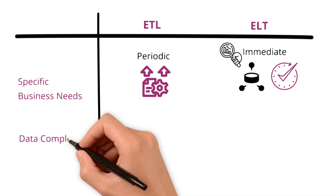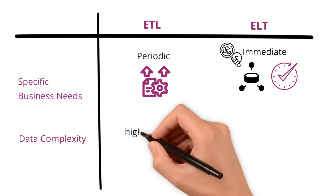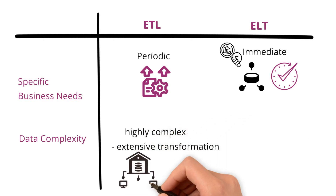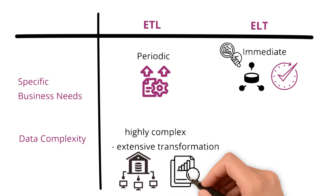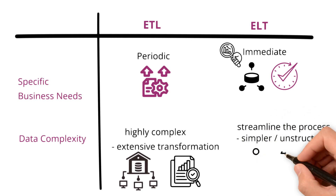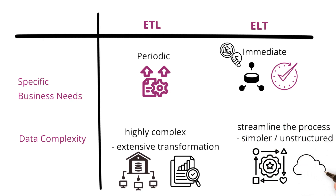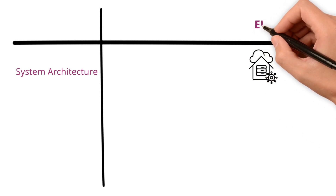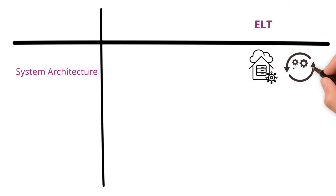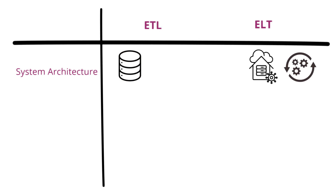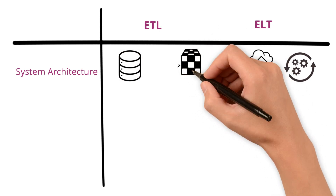Data complexity: consider ETL when dealing with highly complex data that needs extensive transformation, such as combining multiple data sources with different formats, ensuring a refined, report-ready dataset. ELT can streamline the process for simpler or less structured data by transforming data as needed within the storage environment. System architecture: if you are working with a robust, scalable cloud data warehouse architecture, ELT can fully utilize its processing capabilities. Conversely, ETL may be more suitable for traditional databases or where data warehousing is not built to handle intensive in-database transformations.